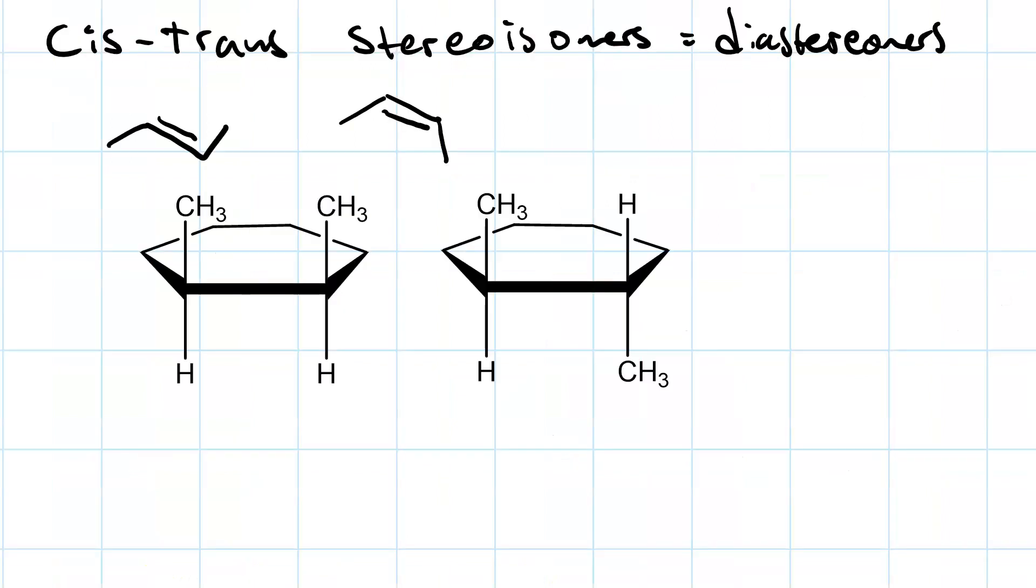You can also have cis-trans stereoisomers in rotation-restricted systems like a ring, cyclohexane. The reason that you have cis-trans in the alkene is because of the rotation restriction having to do with the double-bond. But rings also give rotation restriction.